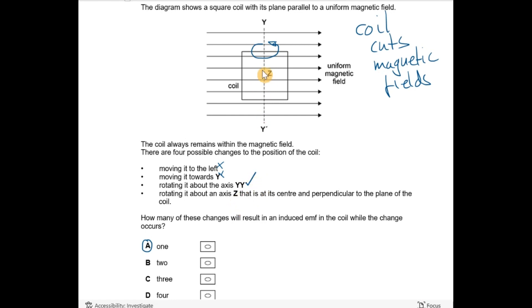Rotating it about the Z axis, the Z point there, well that's just going to rotate the coil. Again, it's going to stay in the plane of the paper, it's not going to cut any of those lines, so that's not going to produce an EMF. So only rotating it about the Y axis, that's the only option we were given that's going to produce EMF. So the answer is A.